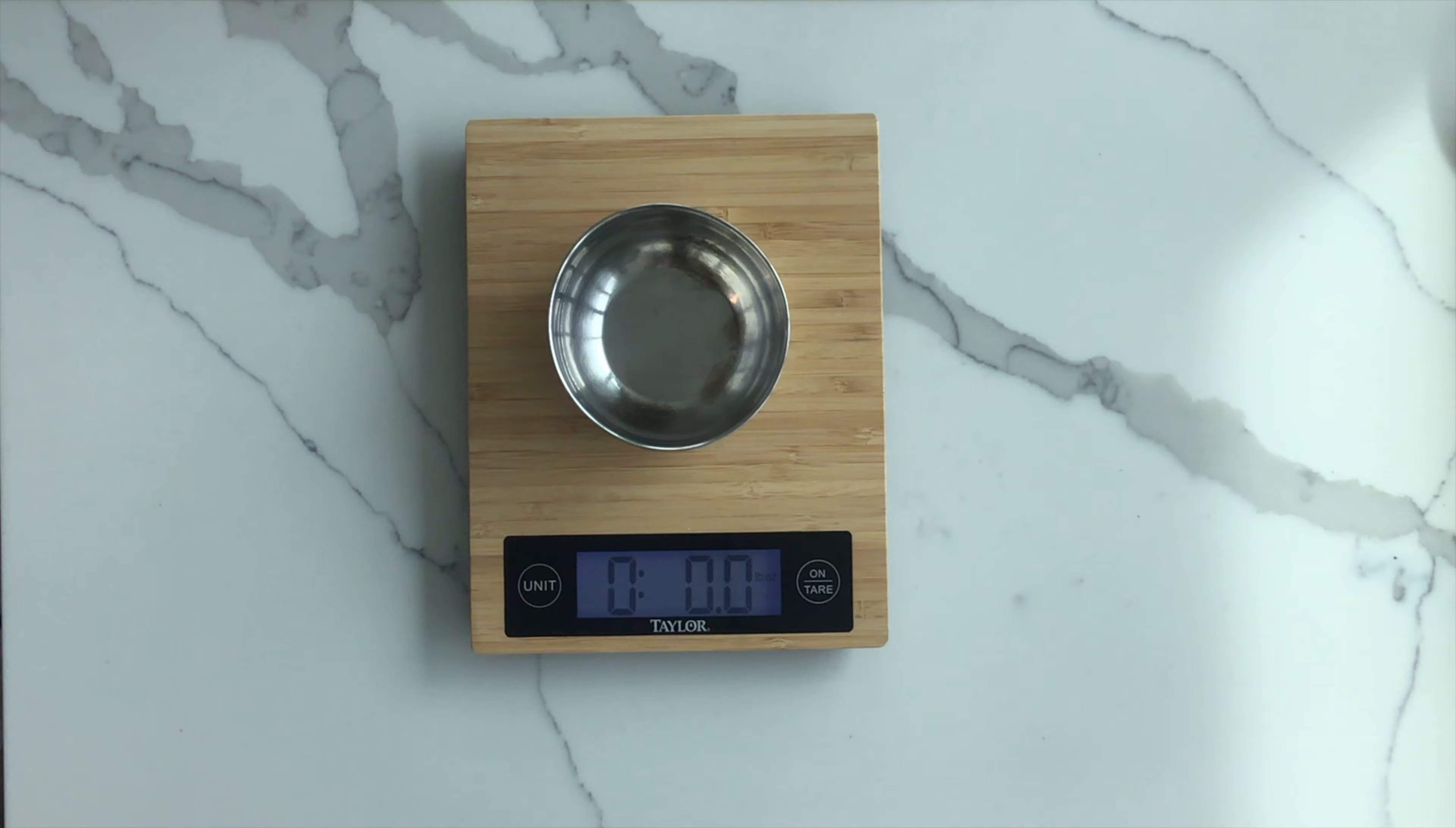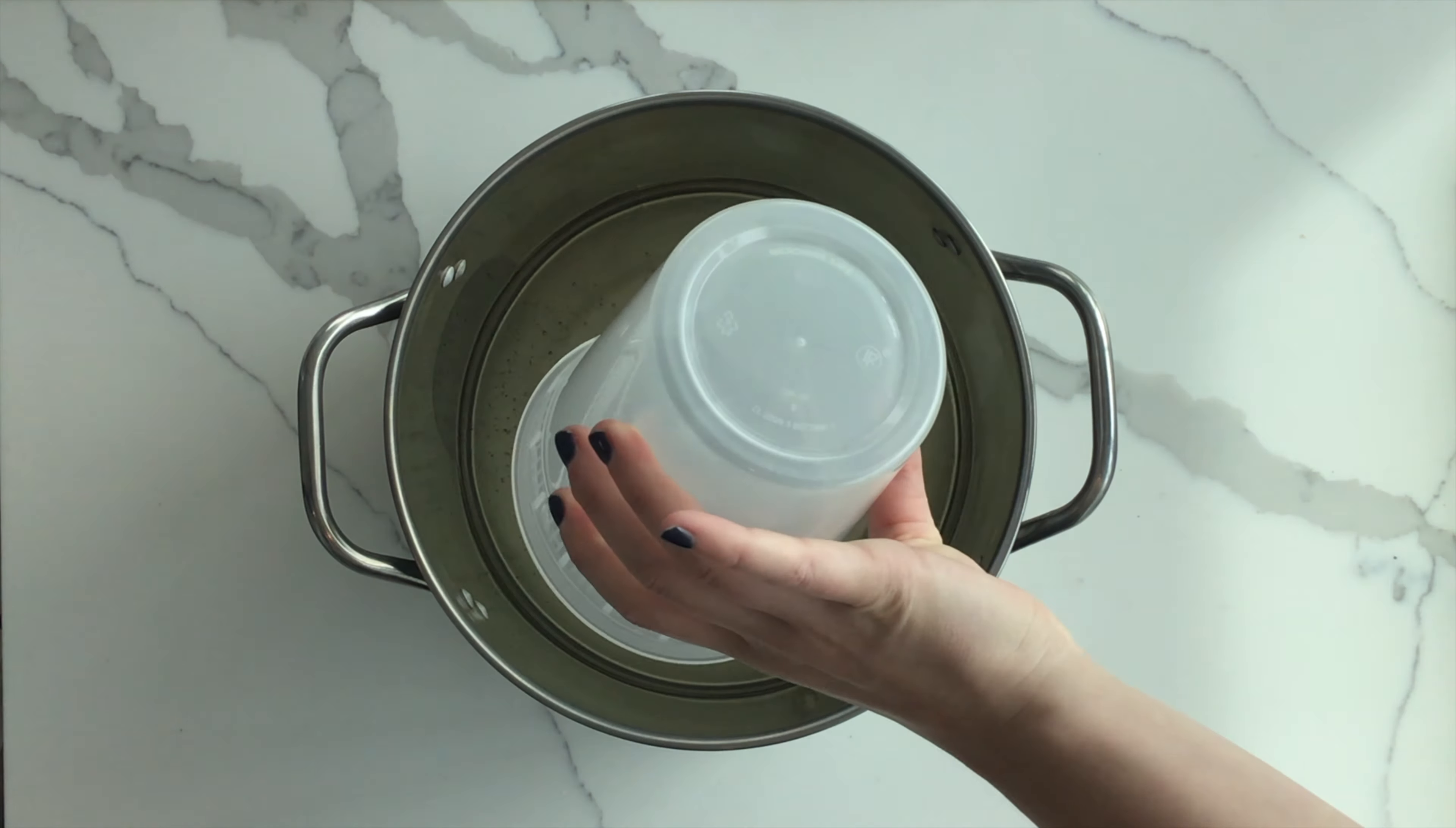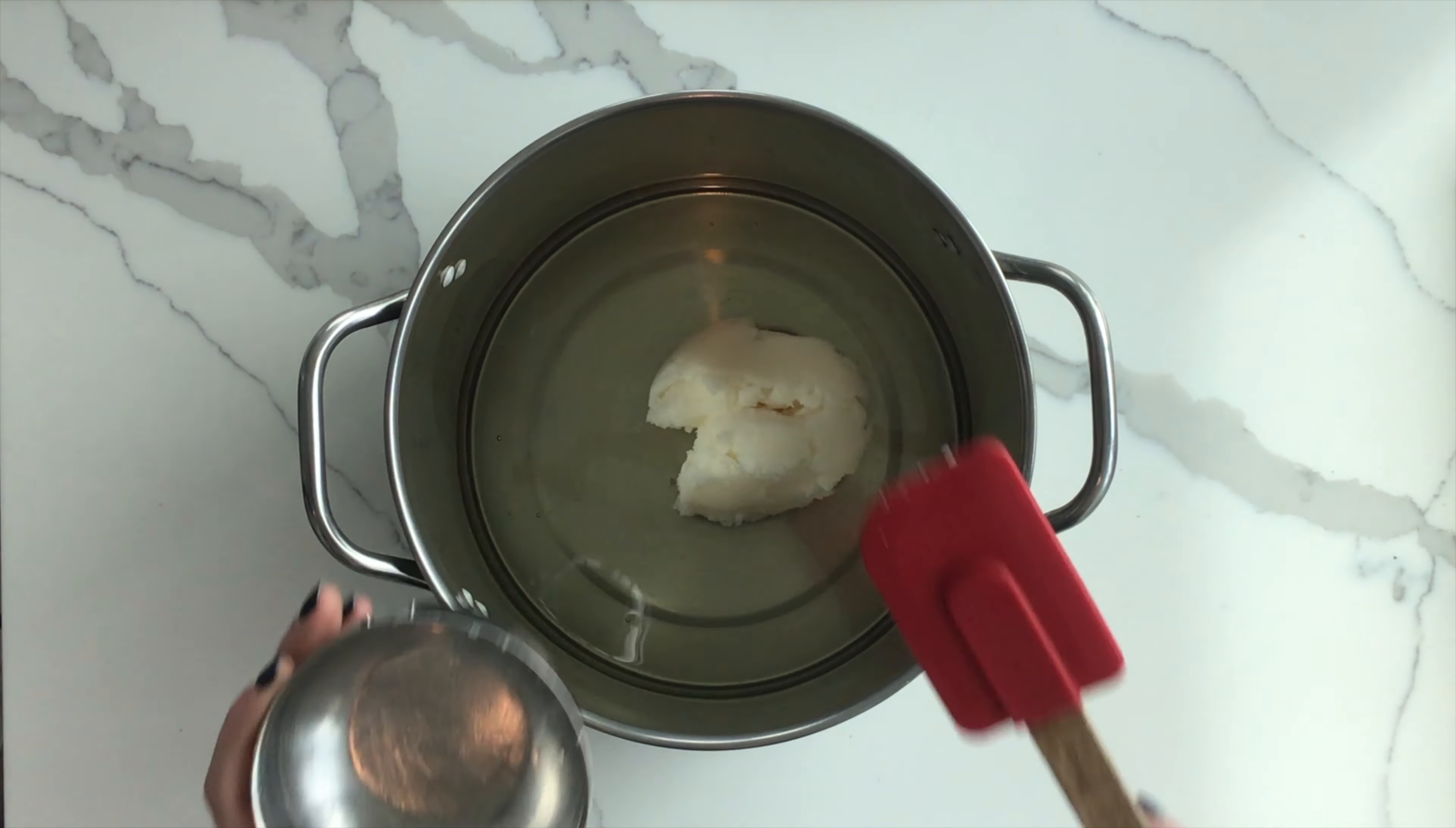The scale only shows the weight of the ingredient and not the container it is in. Set out your largest stainless steel container. Pour in your olive oil, add your coconut oil. Put your pot on the stove on the lowest setting. You want the solid oil to melt slowly at a low temperature.